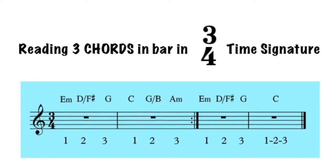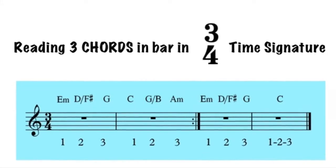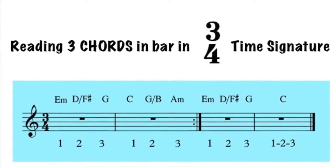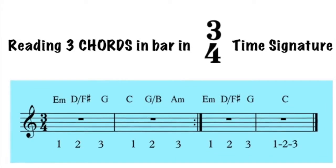The example shows that there are three chords in every bar. Simply divide each count evenly and play each chord for one count.